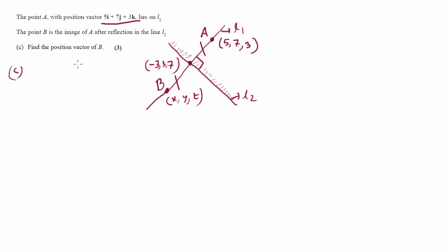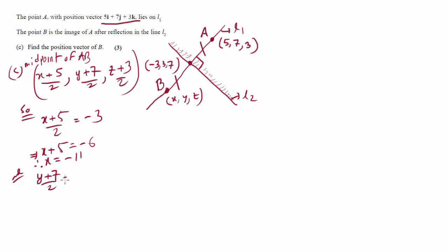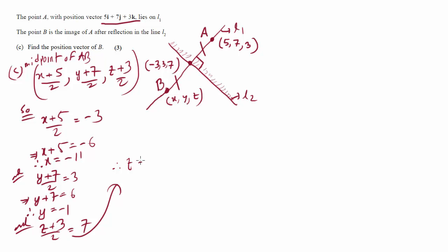Suppose B is the point x, y, z. We find the coordinates of B using the midpoint rule, since reflection means the intersection point is the midpoint. The midpoint of AB is: x plus 5 over 2, y plus 7 over 2, z plus 3 over 2. Since the midpoint of AB is minus 3, 3, 7: x plus 5 over 2 equals minus 3, so x equals minus 11; y plus 7 over 2 equals 3, so y equals minus 1; z plus 3 over 2 equals 7, so z equals 11.